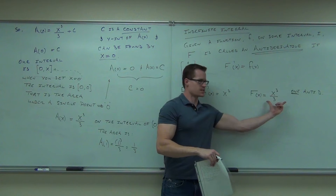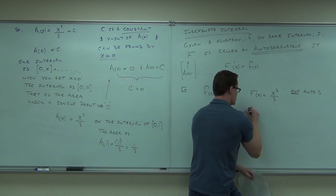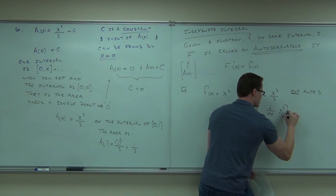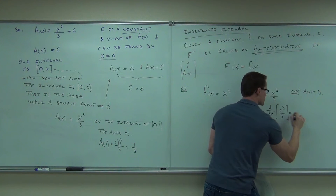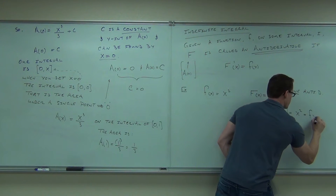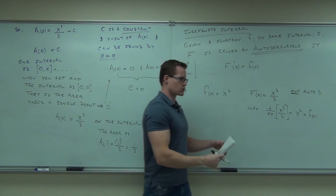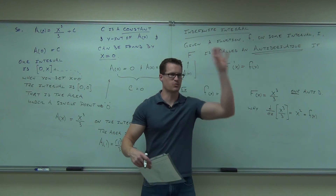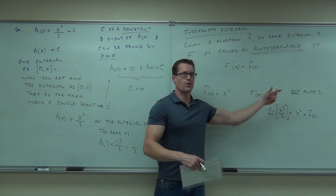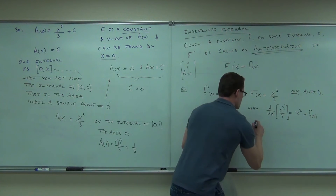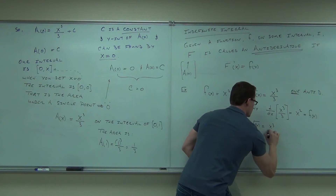Why is it an anti-derivative? If you take a derivative of this, does it not equal this? Because the derivative with respect to X of X cubed over three is X squared, which is f of X. That's why it works. An anti-derivative has this property: I take a derivative of it and it gives me a function. Are there more? There are infinitely many more. Another capital F of X would be X cubed over 3 minus 4 — that's another one of those anti-derivatives.